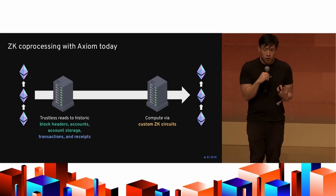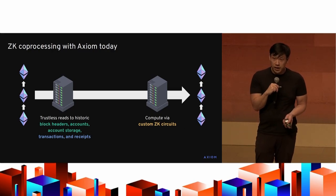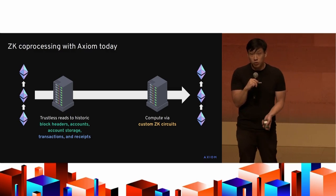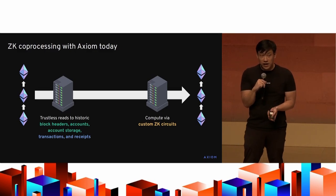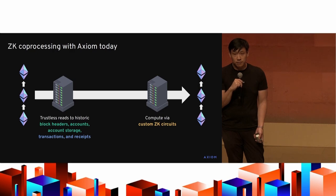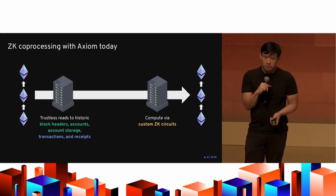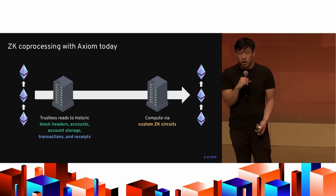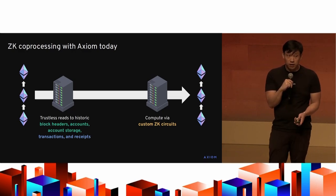We just went live on mainnet with trustless access to any historic block header, account, or contract storage variable two weeks ago. This week at ECC, we've launched transactions and receipts to testnet. In this way, smart contracts can access any piece of execution layer data on-chain today. We also offer the ability to write custom ZK circuits to compute over that data, and all of it can be verified on-chain fully trustlessly.